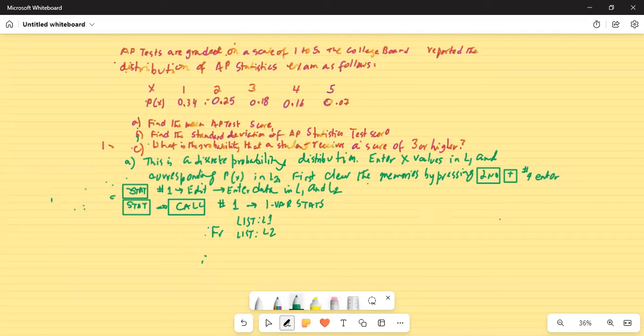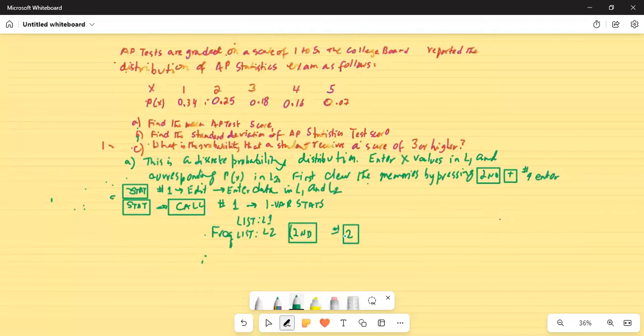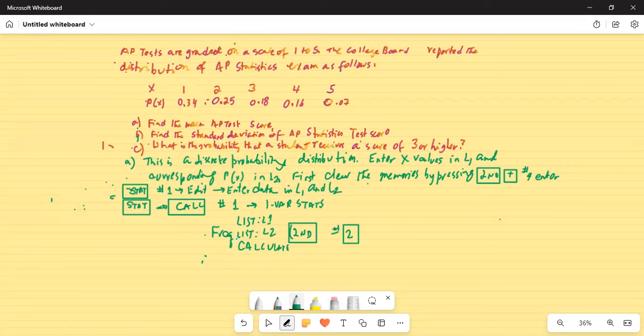So frequency list, this is done by pressing the second button and then number two. Second and two. We will make it L2 and then we go to calculate. The last step is to calculate and hit enter.